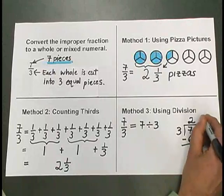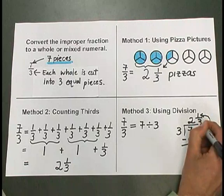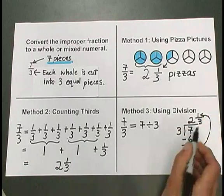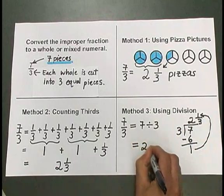And my remainder of 1, I can write over 3. And there's my answer to the division, 2 and 1 third.